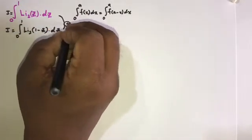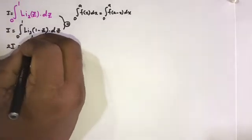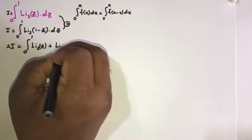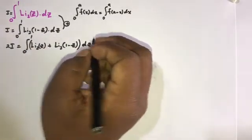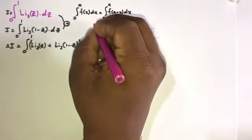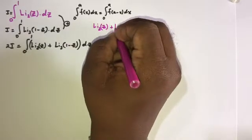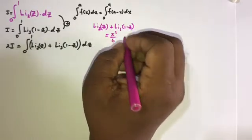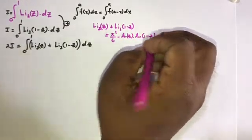Now I am going to sum these two equations, so we can write 2I is equal to the integral from 0 to 1 of the dilogarithm of c plus the dilogarithm of (1 minus c) dc. We know this property of the dilogarithm function: Li₂(c) + Li₂(1 minus c) is equal to π²/6 minus ln(c) times ln(1 minus c).